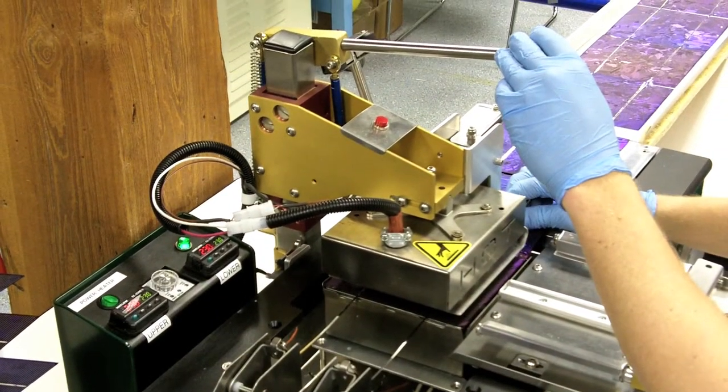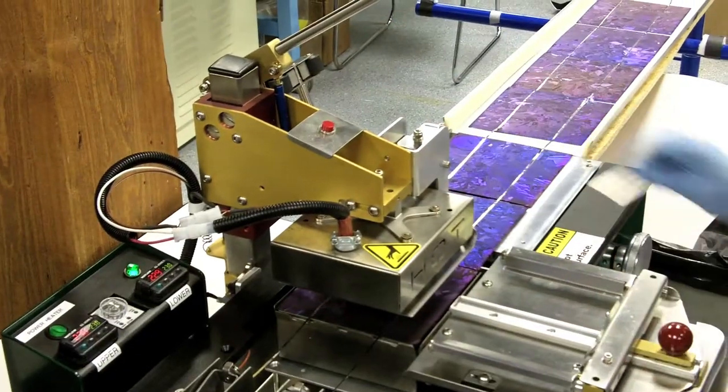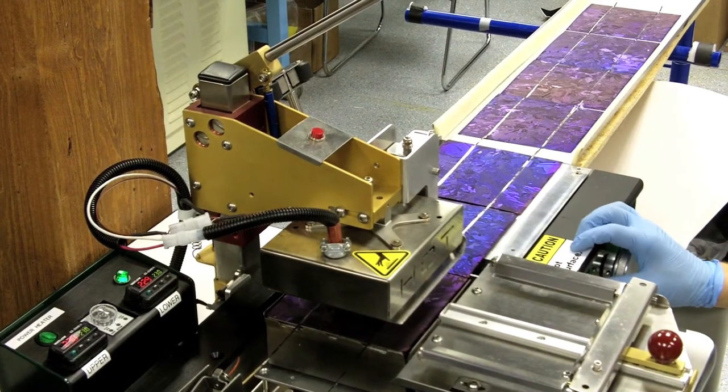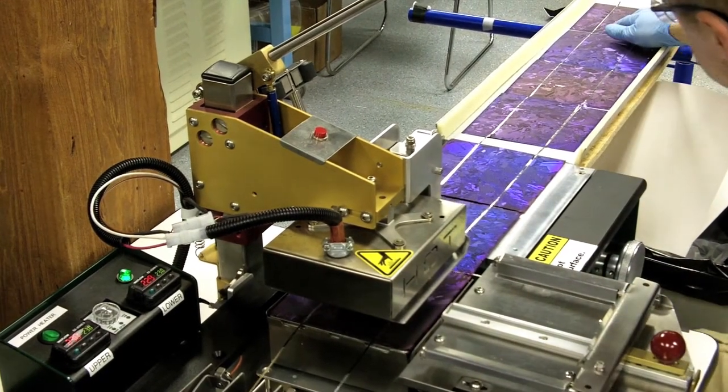The lab can vary the type of bus bar used to increase the amount of light that reaches the solar cell material, for example. It can also vary the number of solar cells in a string according to the design of a solar panel.